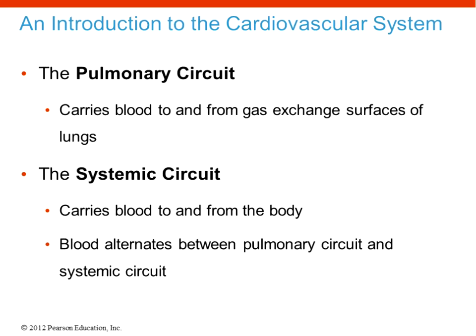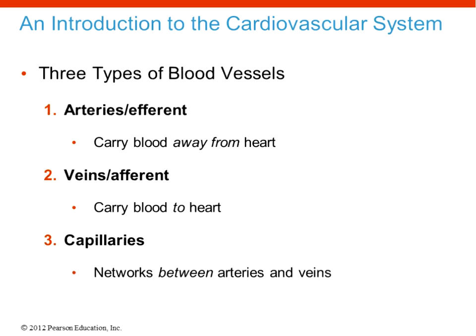The heart is considered a double pump because it has two circuits: the pulmonary circuit and the systemic circuit. The pulmonary circuit carries blood to and from the gas exchange surfaces of the lungs — think pulmonary, think lungs. The systemic circuit goes to the rest of the parts of your body. Both circuits include a discussion of veins and arteries. Blood alternates between the pulmonary circuit and the systemic circuit in a nice loop for this double pump.